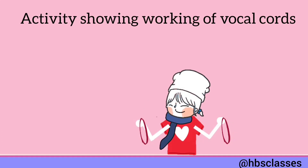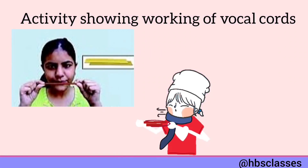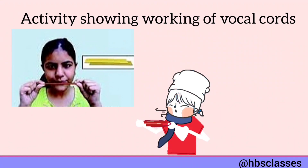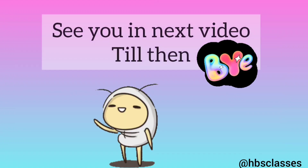Take two rubber strips of the same size. Place these two rubber strips one above the other. Hold the two ends of the rubber strips in your hands and stretch them tight. Keep the stretched rubber strips in front of your mouth and blow air through the thin gap between them. As the air blows through, a sound is produced by the vibrations of the stretched rubber strips. Our vocal cords produce sound in a similar way.